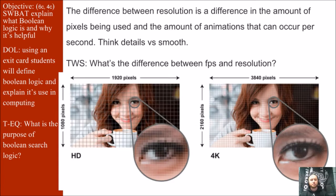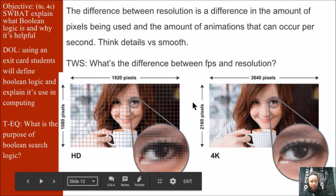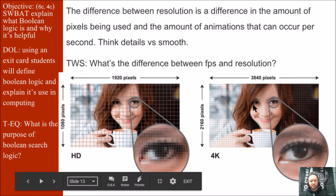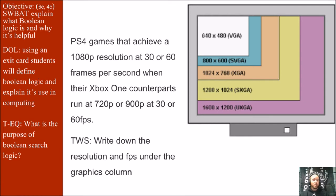The difference between resolution is the difference in the amount of pixels being used and the amount of animations that can occur per second. Think of picture detail versus smoothness when going from one picture to the next. Think-Write-Share: what's the difference between FPS and resolution? This image shows the difference between 1920x1080 pixels and 3840x2160 pixels — you can see the amount of detail is significantly greater in the higher resolution. For your chart: PS4 games achieve up to 1080p resolution at 30 or 60 frames per second. The Xbox runs at 720 or 900 resolution — depending — and also at 30 or 60 FPS, so the frames per second is the same but not the resolution itself.